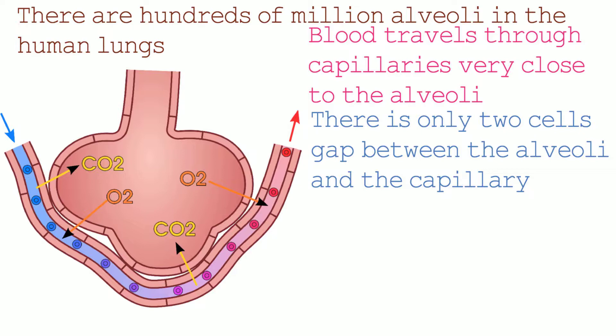The lungs are part of the pulmonary circulatory system. This system is where blood is pumped from the heart through the lungs and back to the heart. The blood in the capillary at the start of the alveoli is deoxygenated, because the blood has traveled around the body where it supplies cells with the oxygen required for respiration. Furthermore, the deoxygenated blood contains a large amount of carbon dioxide. It has gained this carbon dioxide from cells that respire it. Remember that carbon dioxide is a waste product of respiration.